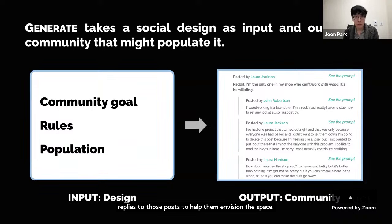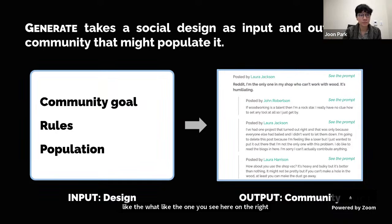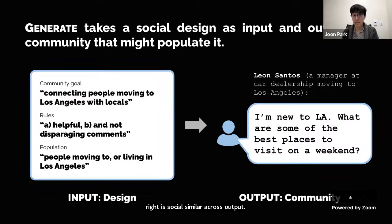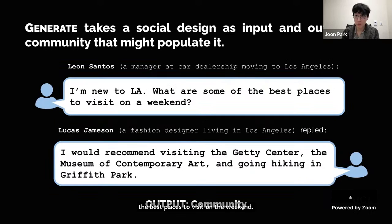Generate helps designers by populating a subreddit community with generated users, top-level posts, and replies to help envision the space. It takes design specifications such as goals, rules, and member compositions and returns a subreddit-like page. For example, in a community for connecting people moving to Los Angeles with locals, Social Simulacra generated a new user Leon Santos who posted: 'I'm new to LA, what are some of the best places to visit on a weekend?' In response it generated Lucas Jameson who replied: 'I would recommend visiting the Getty Center, the Museum of Contemporary Art, and going hiking.'